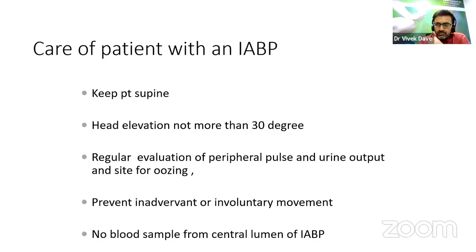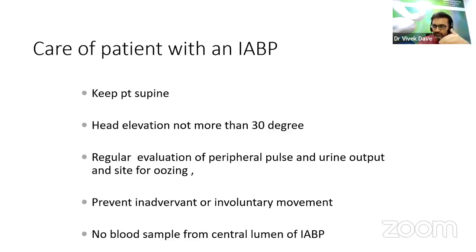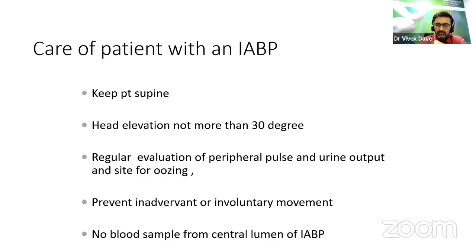As far as care of the patient is concerned — most important from a nursing perspective — when the balloon pump is in place, keep the patient supine, head elevation not more than 30 degrees, regular evaluation of peripheral pulse, urine output, and the site for oozing. When you receive the IABP patient post-cath lab to ICU, monitor vigilantly. Regular evaluation of peripheral pulse is critical because peripheral arterial circulation may be hampered and the patient may develop ischemic signs in the lower limb. Involuntary movement should be prevented by keeping the patient's limb restrained where the IABP is inserted. No blood samples from the central lumen of IABP.